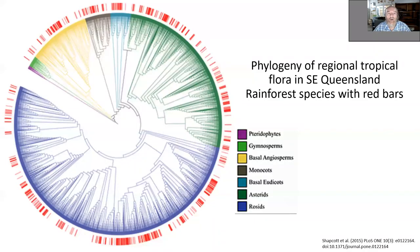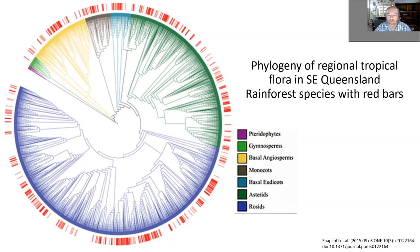The same goes for this regional phylogeny of tropical Australian plants, with all the rainforest species shown by red bars. The colors here are different, but when we look at rosids — that's the blue one — and then the asterids is the adjacent green one. So again, three quarters or 80% of species belong to these two large lineages.